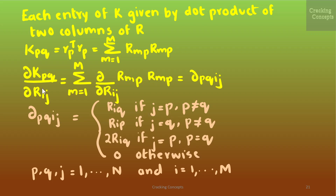δ_{pqij} has four cases: when j = p and p ≠ q the result is R_{iq}; when j = q and p ≠ q the result is R_{ip}; when j = p and p = q the result is 2R_{iq}; and 0 for all other cases. Here p, q, and j vary from 1 to N and i from 1 to M.